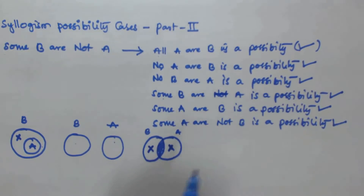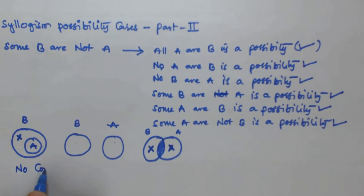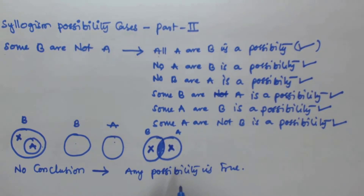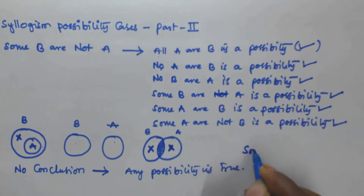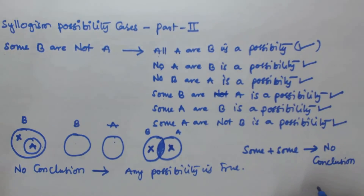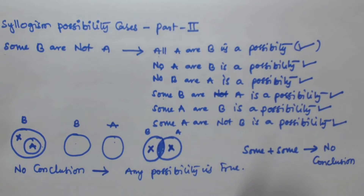Another important rule: if we get no conclusion from the given statements, then any possibility is true. In previous videos under the syllogisms section, I taught one rule: sum plus sum implies no conclusion. So if no conclusion is obtained, any possibility cases given in the conclusion are going to be true.